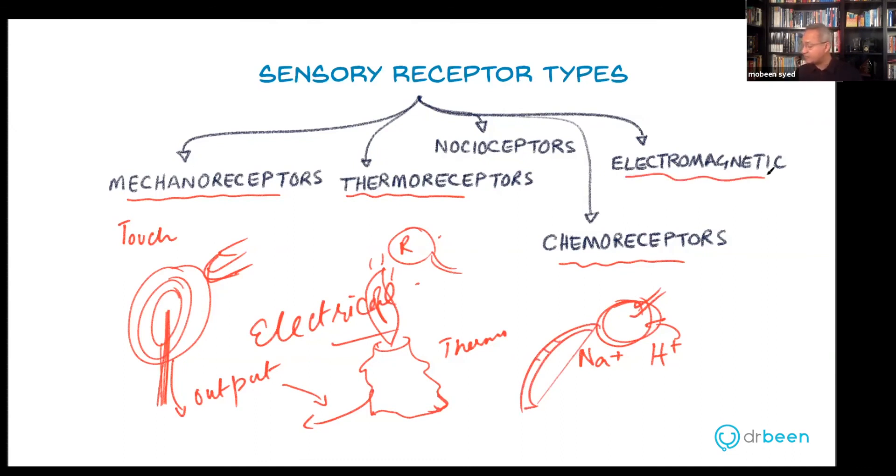Then electromagnetic. Electromagnetic is light. So rods and cones that are present in our eyes, these are specialized receptors that respond to electromagnetic waves or stimuli. Again, that is a sort of an energy that would fall on them. They would transduce that energy into electrical impulses, which will go to our brain.